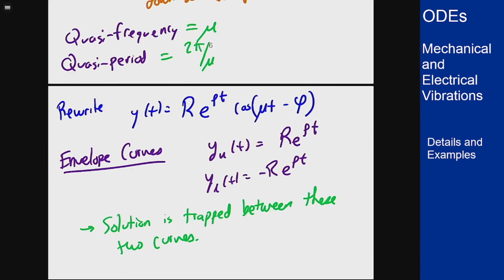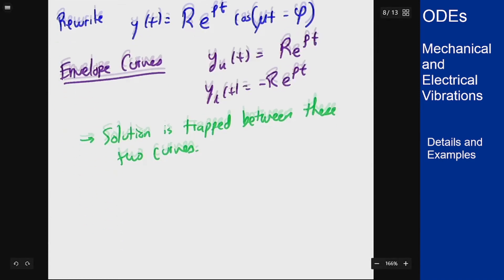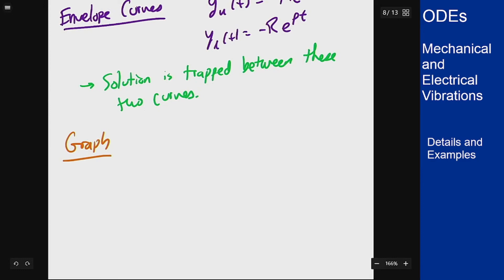And what that means is I can use these two curves to get a graph of this solution. So my graph is going to look something like this so I have some axes here. I can draw in my two envelope curves, my Re^(ρt) and -Re^(ρt), those are exponentials.